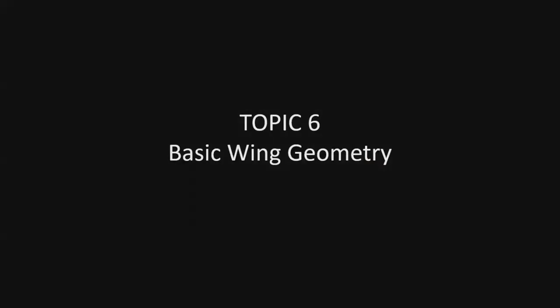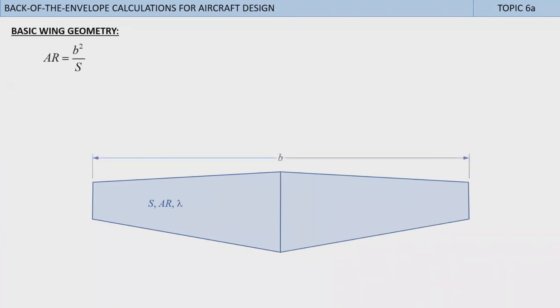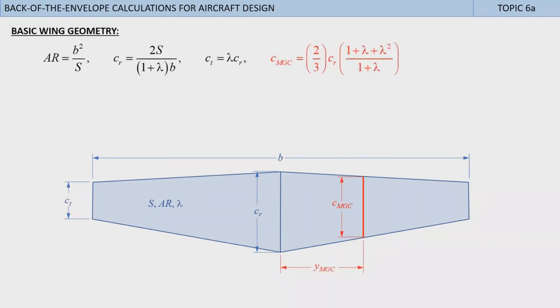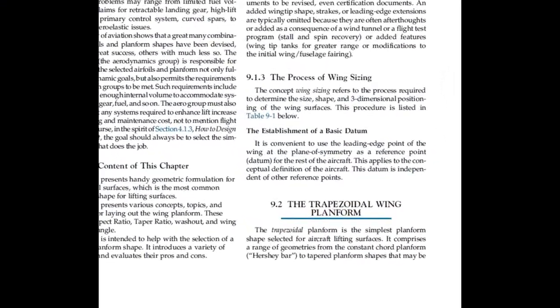Topic 6: Basic wing geometry. This topic involves basic back-of-the-envelope calculation of required wingspan and root and tip chords for a wing for which we know wing area, aspect ratio, and taper ratio. First recall that aspect ratio is given by this expression: wingspan b squared divided by wing area S. The root chord is calculated from this expression, where λ is the taper ratio. Knowing the root chord, we can easily calculate the tip chord. To calculate the mean geometric chord, we use this expression. And to calculate the spanwise location of the mean geometric chord, we use this expression. All of these equations are detailed in section 9.2 in my book.